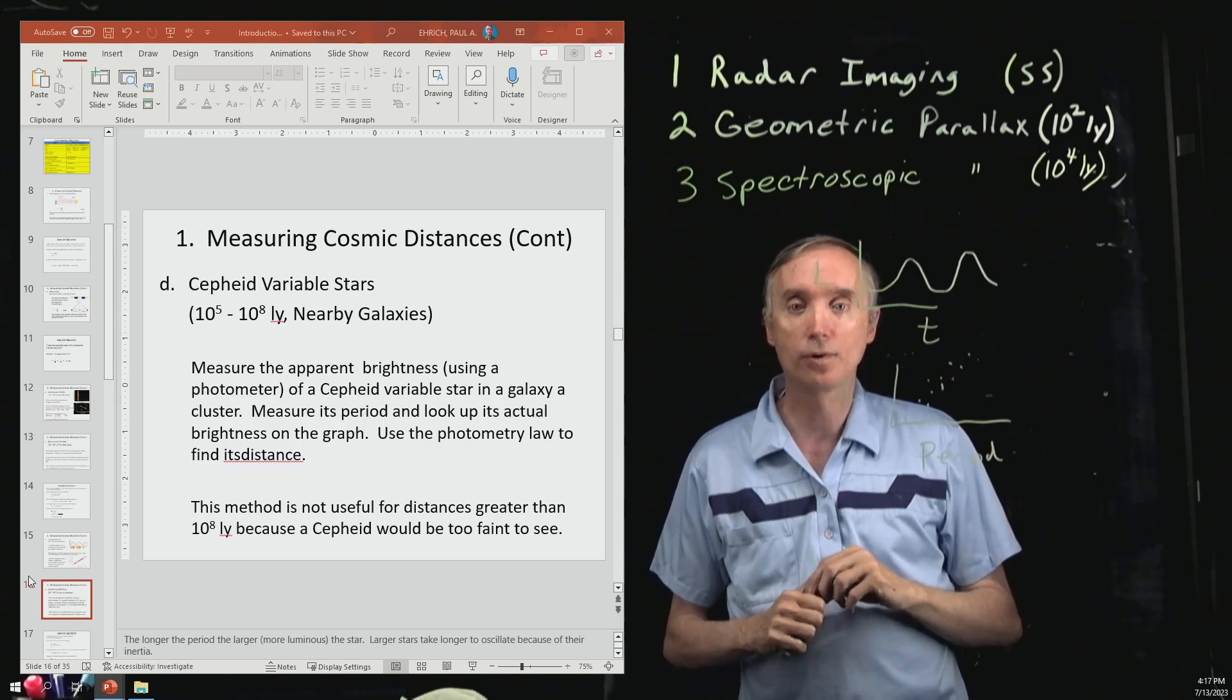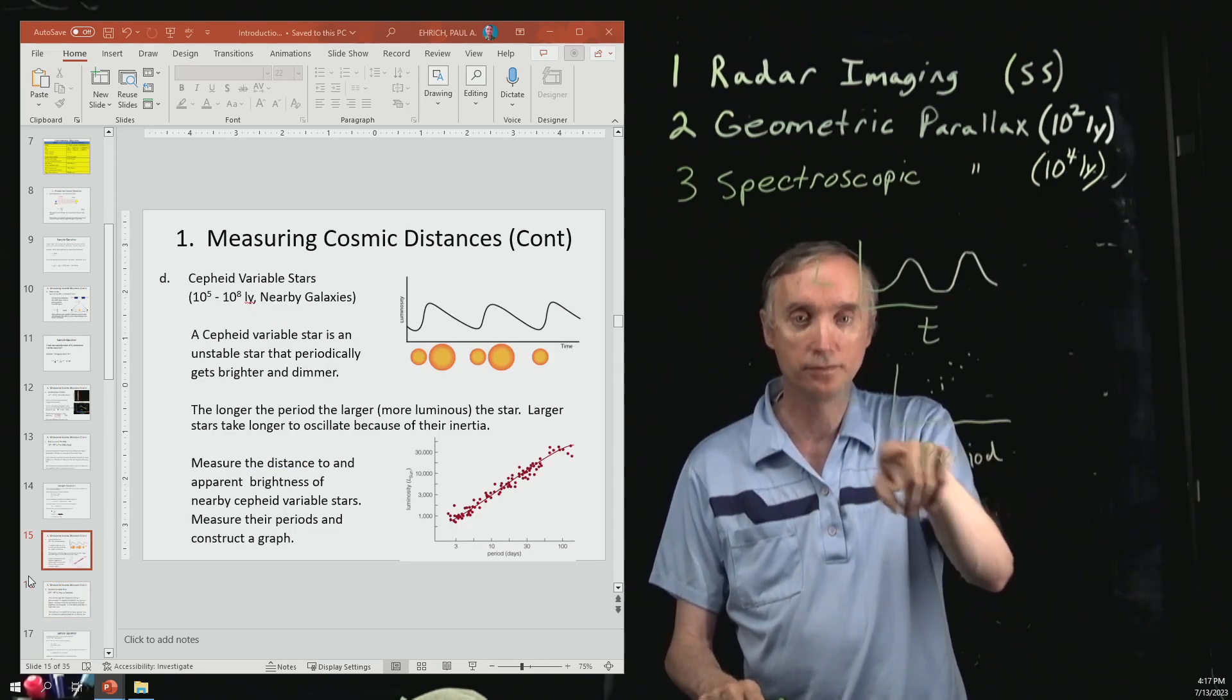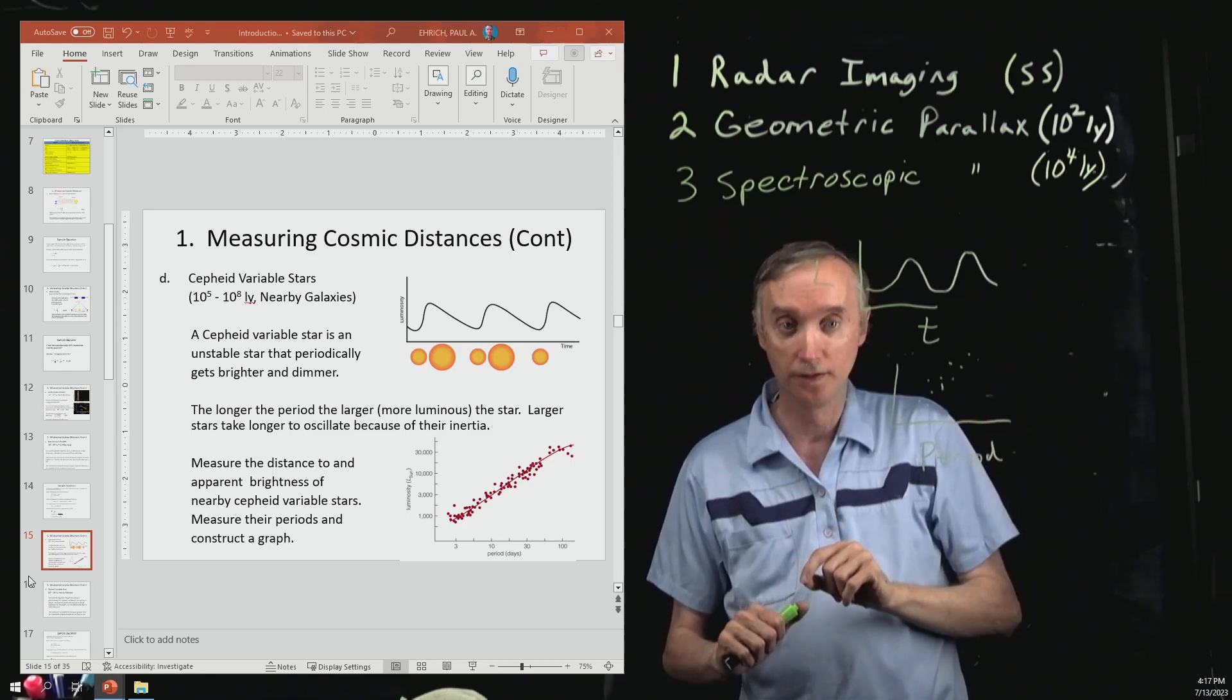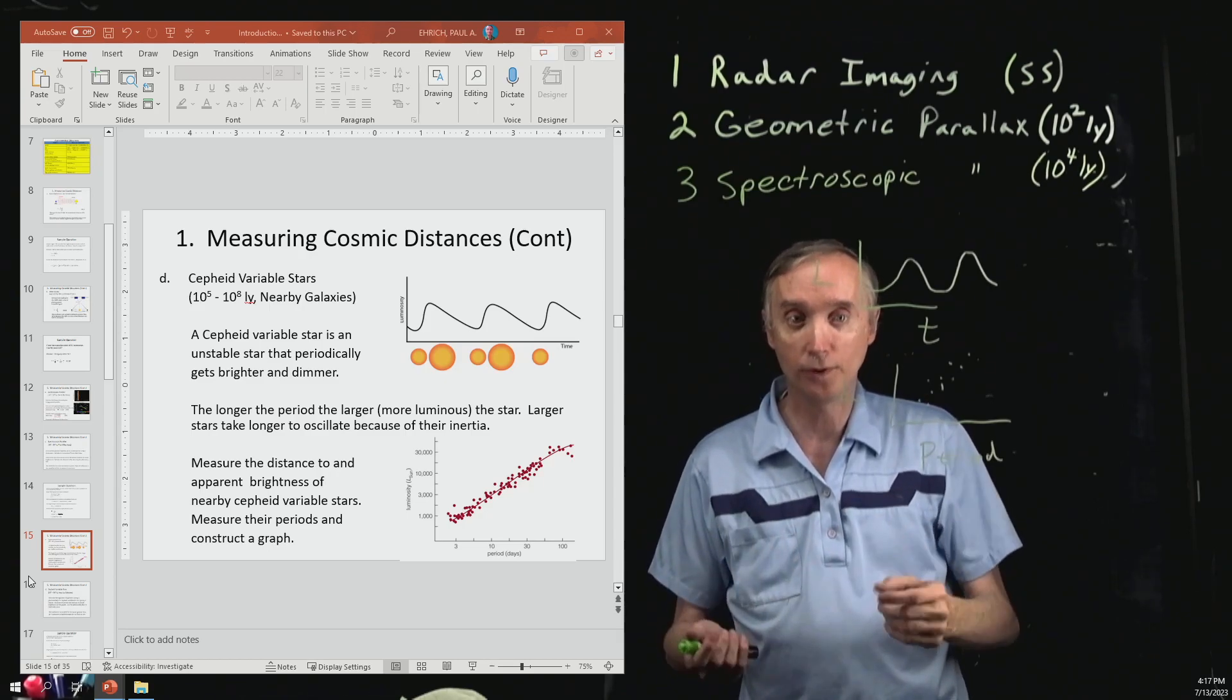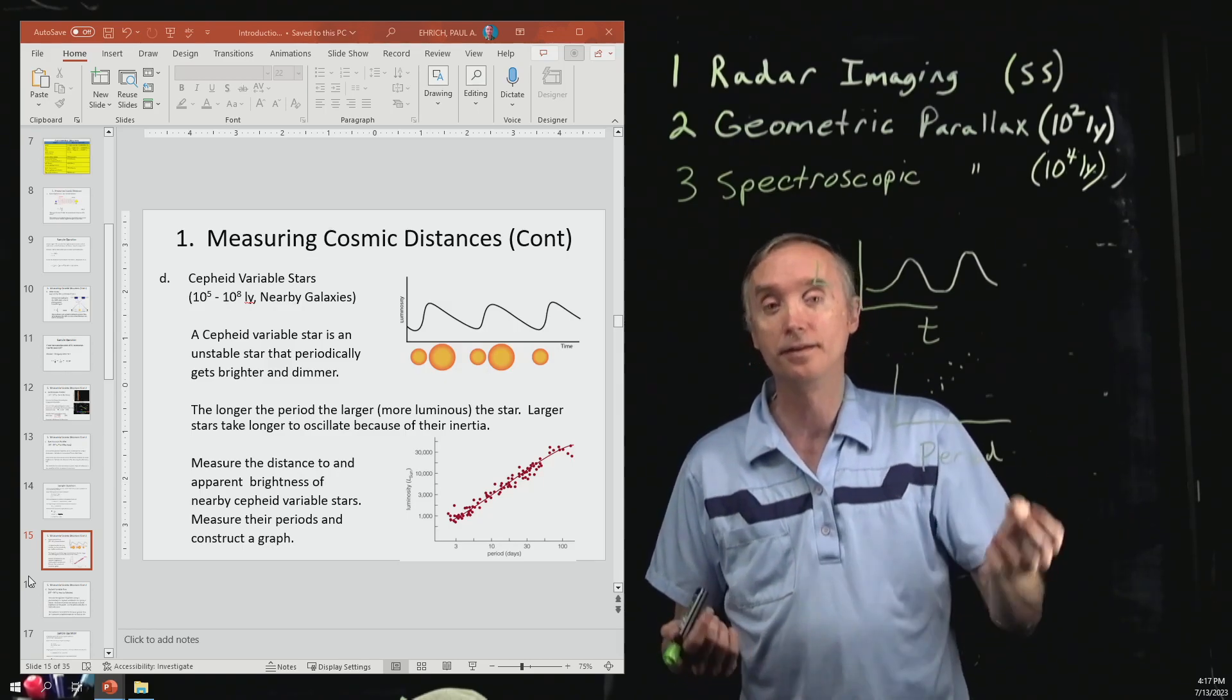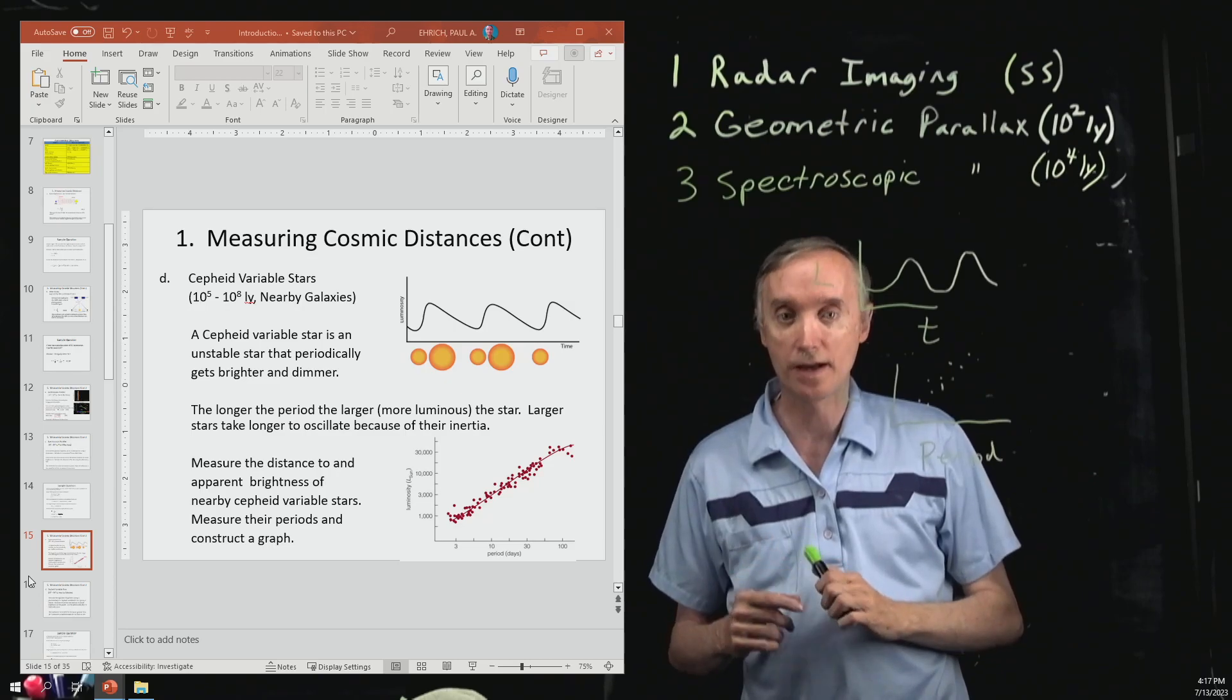And now we're going to look it up on this chart. So we find the period on that bottom chart there. We bounce it off the curve and that gives us L, the actual brightness. So if we know the actual brightness and the apparent brightness with our photometer, then we put it into the photometry equation and now we can figure out the distance to that star.